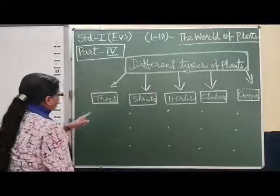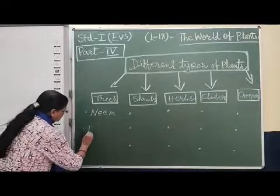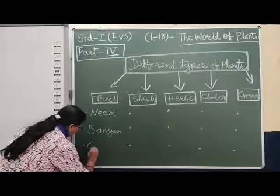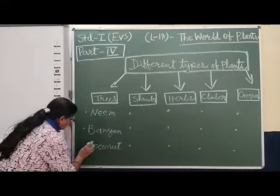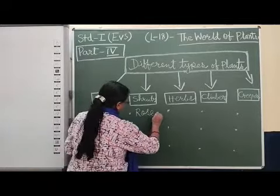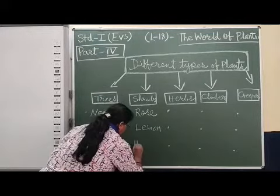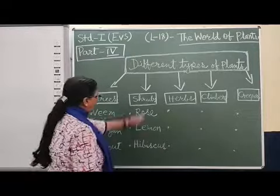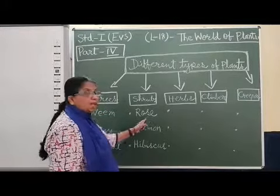Now we will give examples. For trees, we have neem, banyan, coconut. All these are trees. Rose, lemon, hibiscus. All these are the examples of shrubs, because they are small but have strong and brown stem. There are many shrubs also.